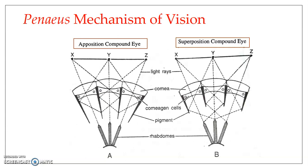Each ommatidium is capable of producing a separate image of a small part of the object seen. If the organism is seeing a larger object, each ommatidium will pick up the image of a smaller part of that particular object. Hence, the image of the object seen may consist of smaller pieces — the total image may be formed of smaller images of various parts of the object seen.